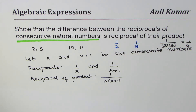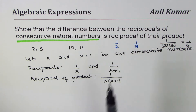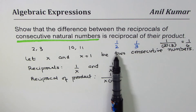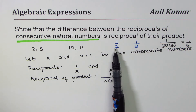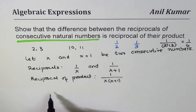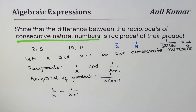Some of you might get a negative answer because order is important. One over two is greater than one over three — when you divide by a smaller number you get a greater result. So we take the difference as one over X minus one over X plus one, in that order.